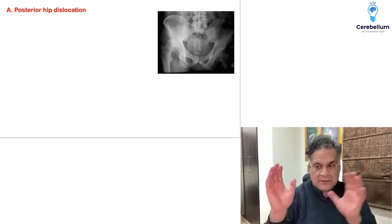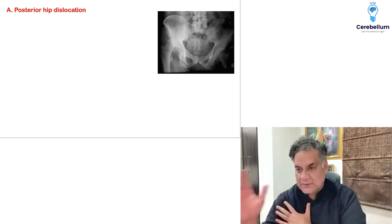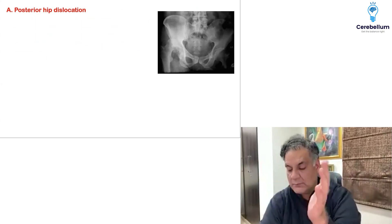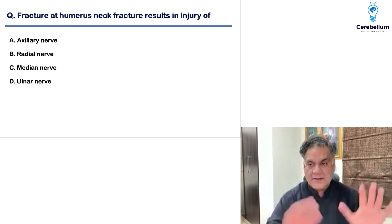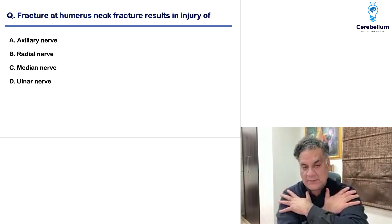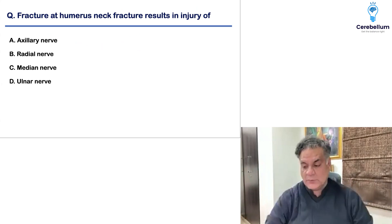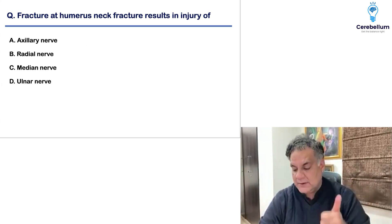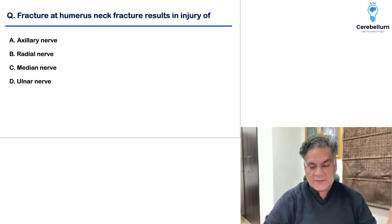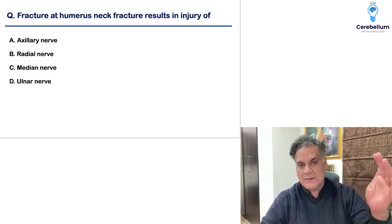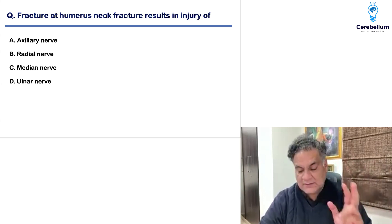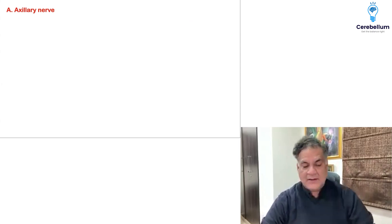There was another mention in the Telegram group of a question on scapular fracture. There is overlap between orthopedics and anatomy. Around the shoulder, the axillary nerve is a very common repeat question — also called the regimental badge sign. This time, the anatomical relationship of the nerve was asked rather than just a nerve injury question.